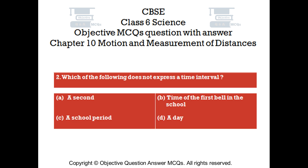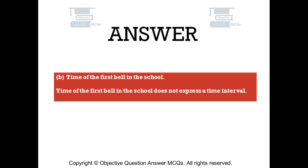Question number 2. Which of the following does not express a time interval? Option A, a second; Option B, time of the first bell in the school; Option C, a school period; Option D, a day. The right answer is Option B, time of the first bell in the school. Time of the first bell in the school does not express a time interval.